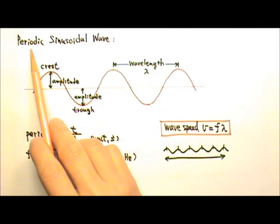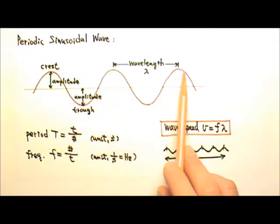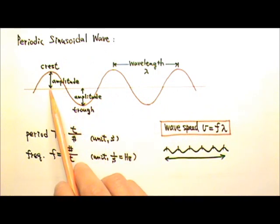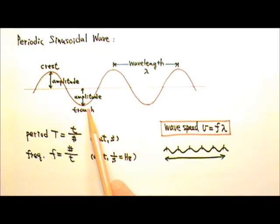Let's go over some terms for a periodic sinusoidal wave. The high points are called wave crests. The low points, troughs. Just like in simple harmonic motion, the amplitude is the distance between the end point and the equilibrium.